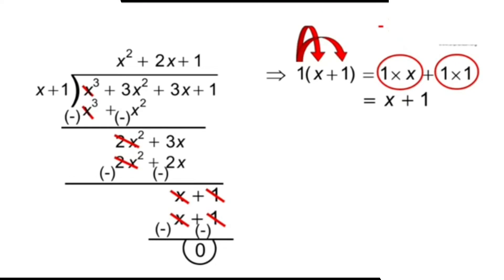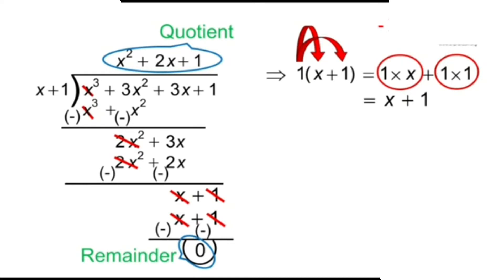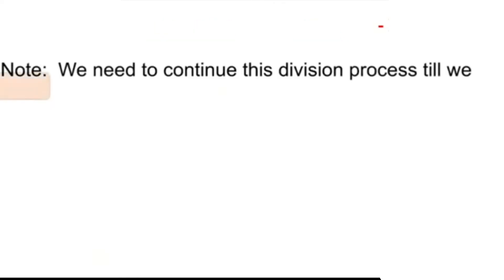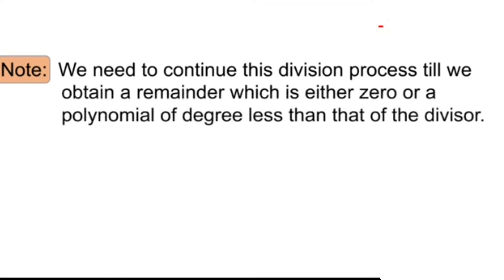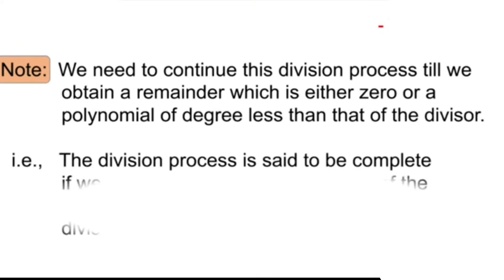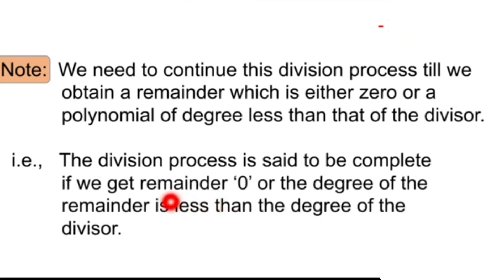Children, this is the process which we need to use while dividing polynomials to get the quotient and remainder. So in this problem, the quotient is x squared plus 2x plus 1 and the remainder is 0. Note: we need to continue this division process till we obtain a remainder which is either 0 or a polynomial of degree less than that of the divisor. The division process is complete if we get the remainder as 0 or the degree of the remainder is less than the degree of the divisor.